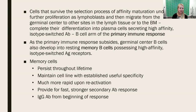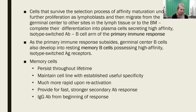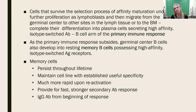So these plasma cells secrete high-affinity, isotype-switched antibody. This is what the B cell arm of the primary immune response does — called humoral immunity, or soluble immunity, the antibody end of it. As the primary immune response starts to shut down and antigen has been cleared and infection resolved, B cells are also going to differentiate into another subset called memory B cells.